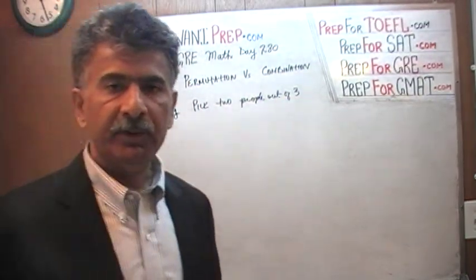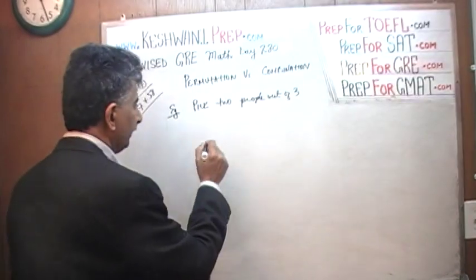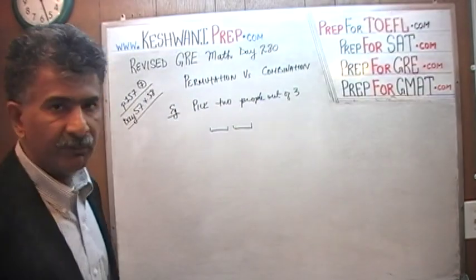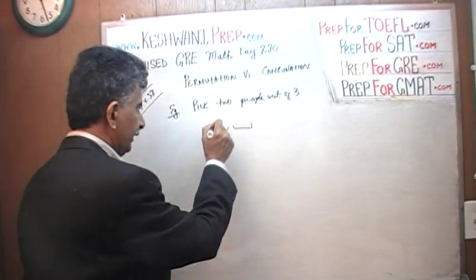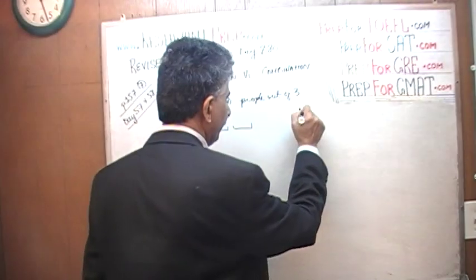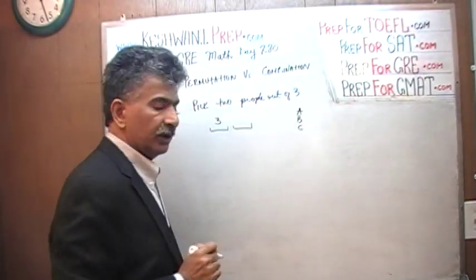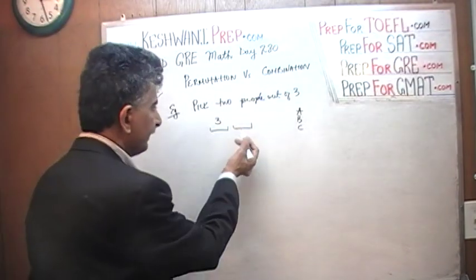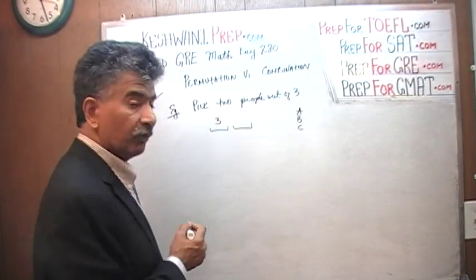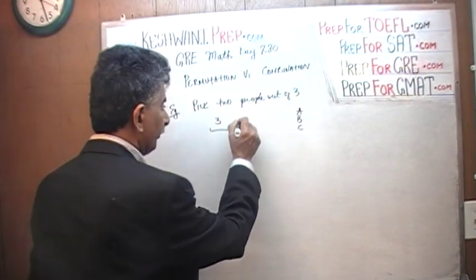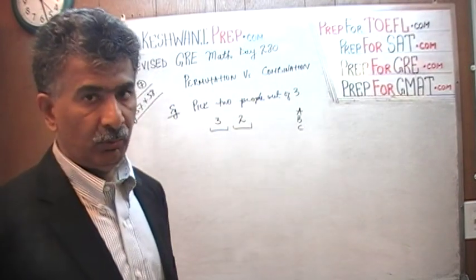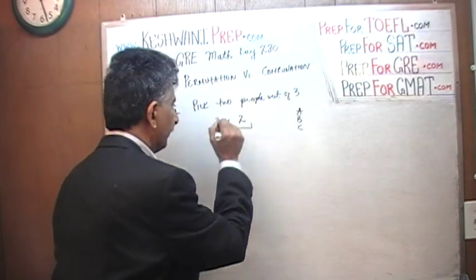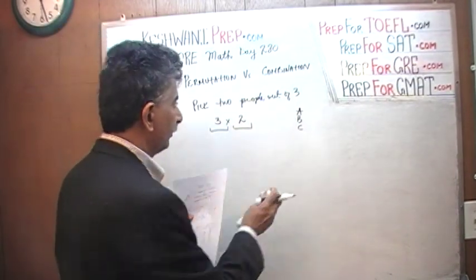How many different ways can we pick two people out of three? If there are three people — A, B, and C — there are three different ways of picking a first person. After we have picked a first person, there are two different ways of picking a second person, because one has already been picked. So there are three times two, or six, different ways altogether of picking two people out of three.